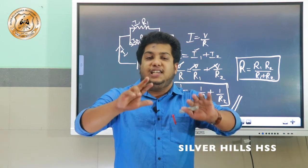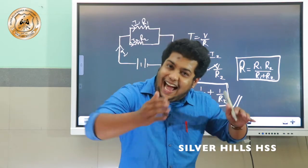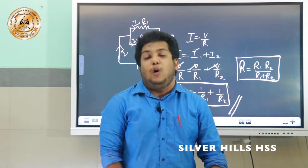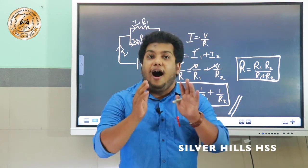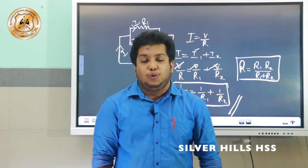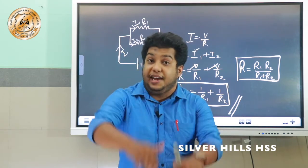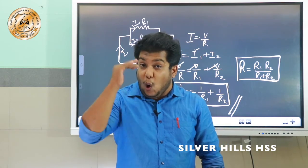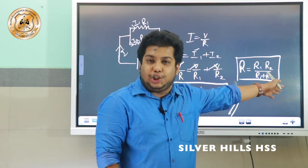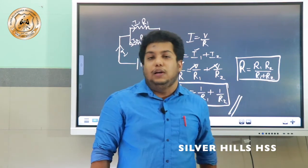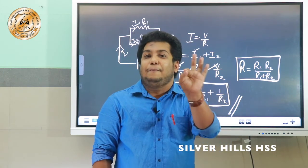We have now discussed the two different types of combinations. The first one is called series combination and the other is called parallel combination. In series combination, the effective resistance is R1 plus R2. In parallel combination, 1 by R is equal to 1 by R1 plus 1 by R2, and the shortcut is R equals R1 R2 divided by R1 plus R2.